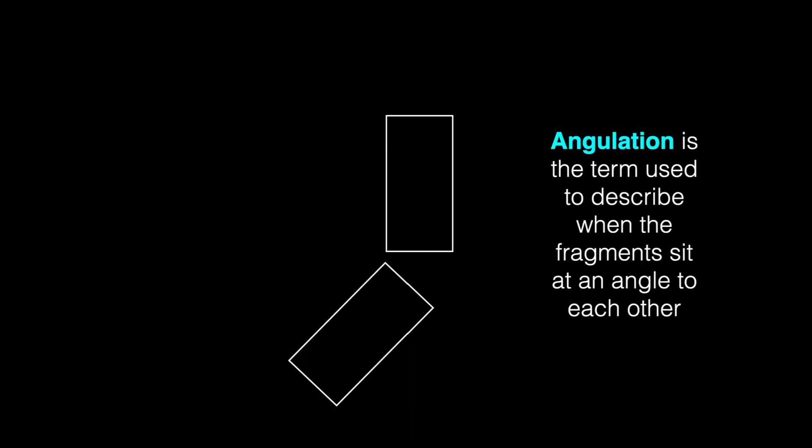So this is our trusty fractured humerus. Angulation is the term used to describe when the fragments sit at an angle to each other, as shown in the illustration.